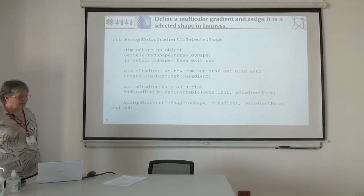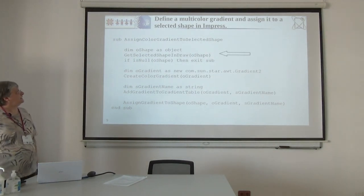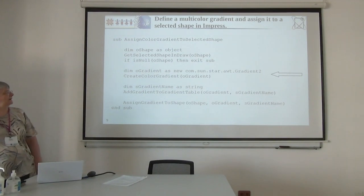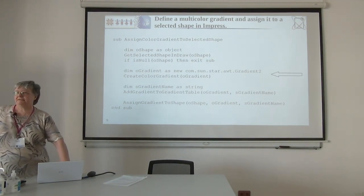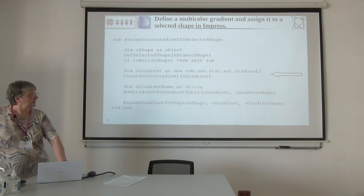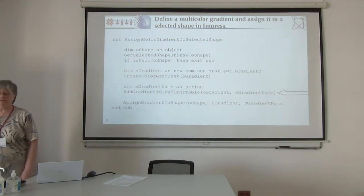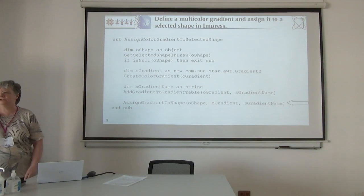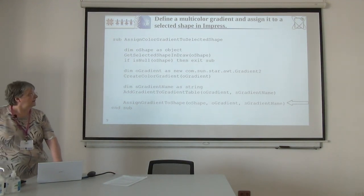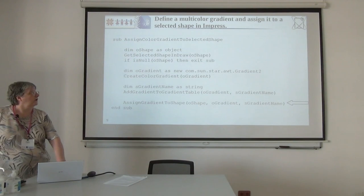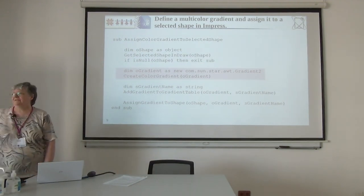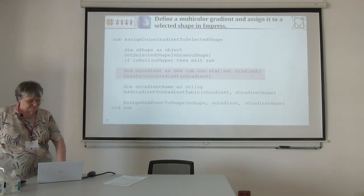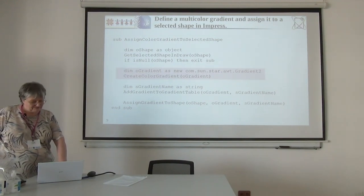First I select the shape. Next I build the gradient. Then I add this gradient to the gradient table — this is a collection I mentioned — and that gives me a new name. Then I can assign this new gradient to the shape. In these four steps only the build-gradient step is new. The other steps would be the same for the current gradients. So we look at this new part.